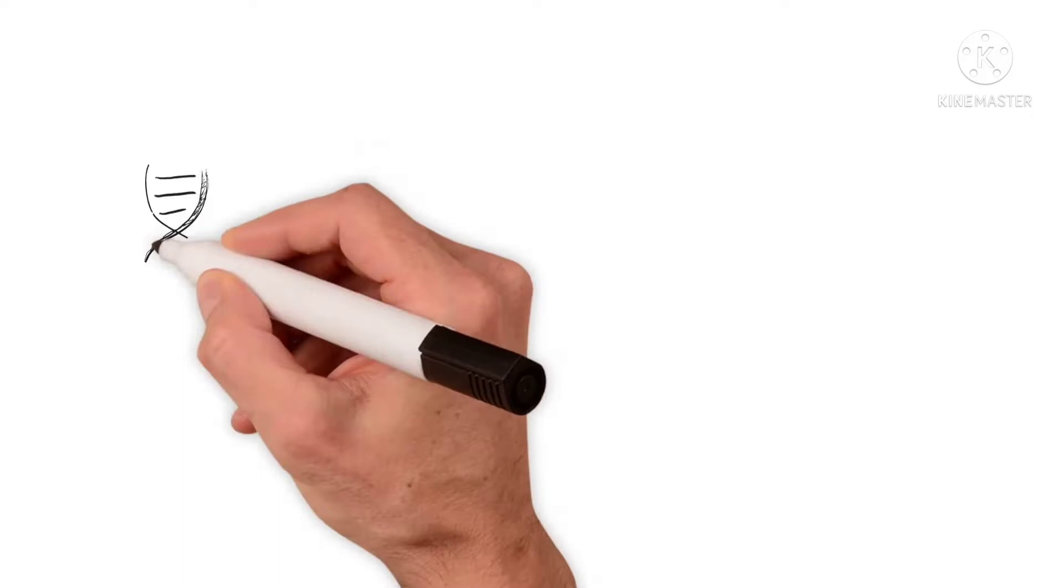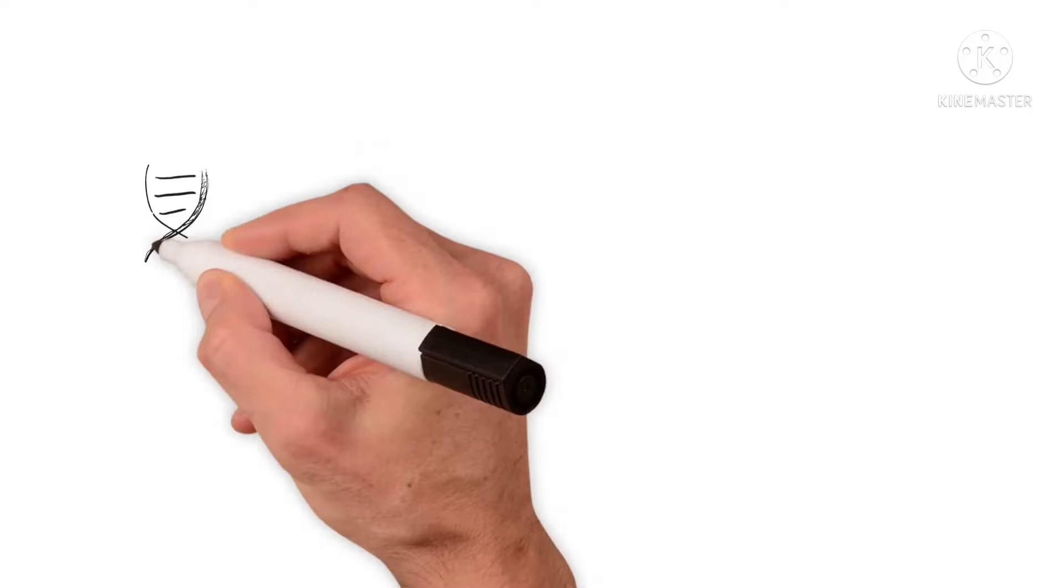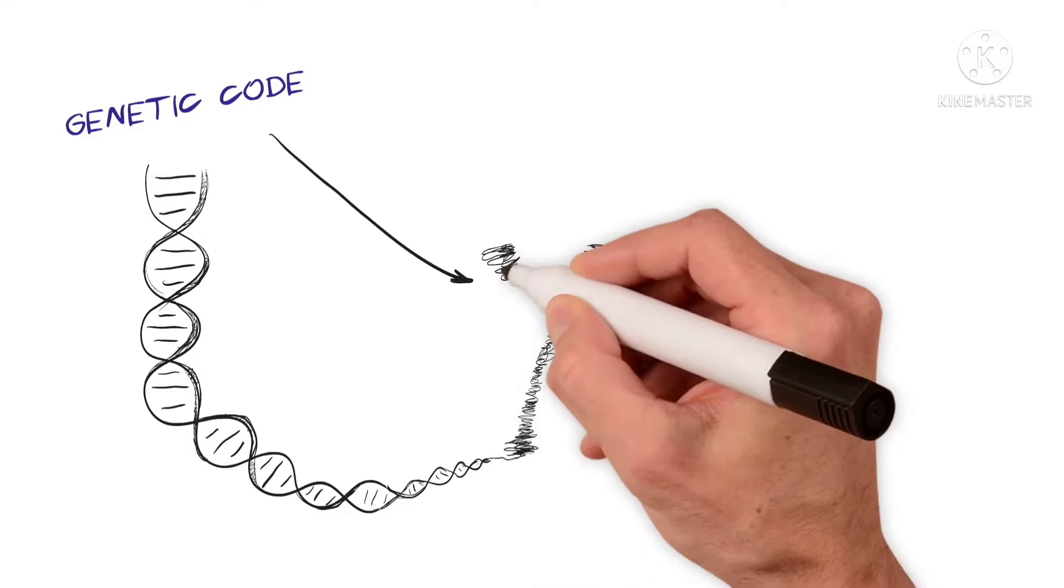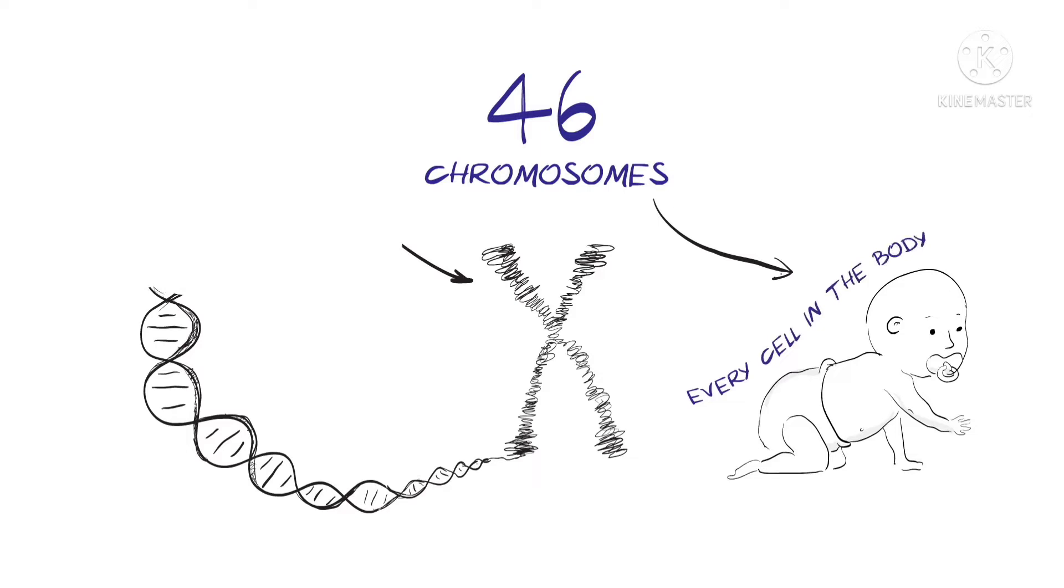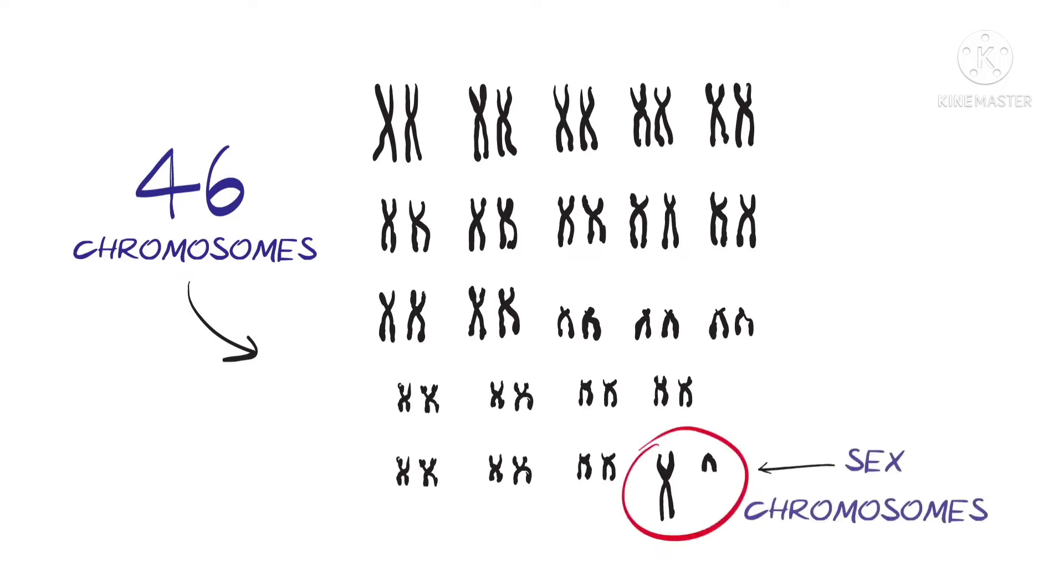Our genes are like a code, which determine how we look and how our body works. All of these genes are wrapped up in 46 chromosomes, which are found in every cell of the body. Of these 46 chromosomes, one pair is different between boys and girls, the sex chromosomes X and Y. Girls have two X chromosomes, while boys have an X and Y chromosome.